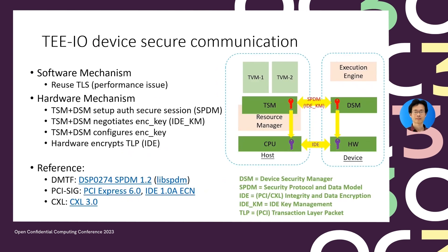First is TEE device secure communication. Since the VMM is untrusted, communication between the TVM and the device must be protected. One idea is to use a software mechanism — for example, we can reuse network TLS to establish a session between TVM and device. This is similar to today's bounce buffer solution. However, since all communication data needs to be encrypted by software, there might be a performance issue.